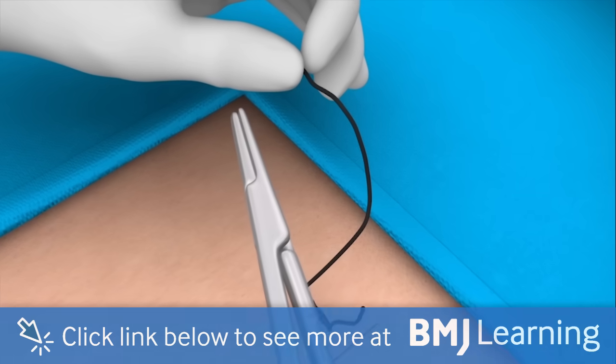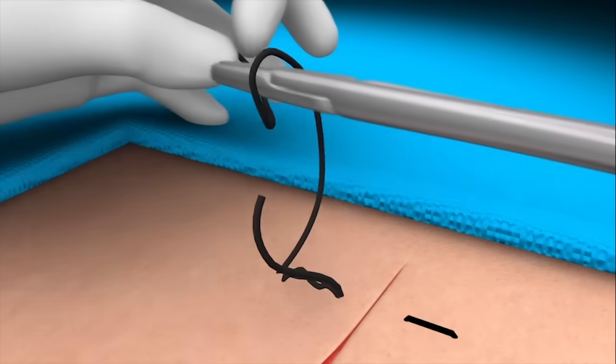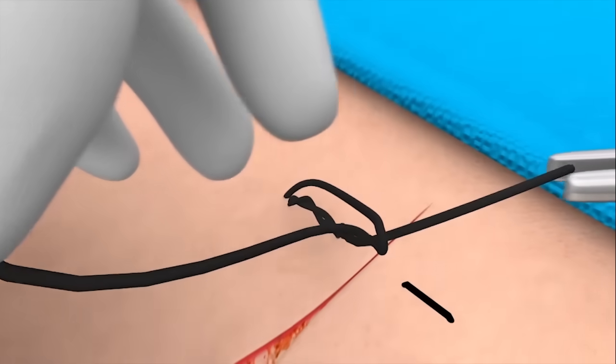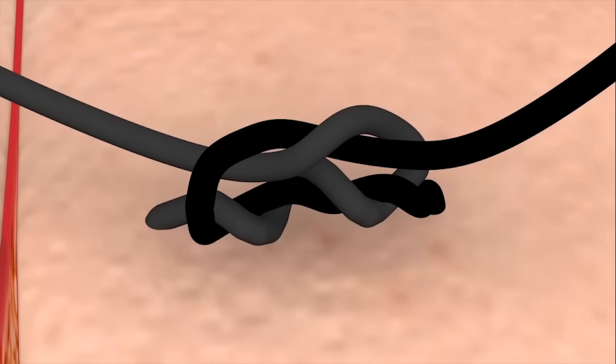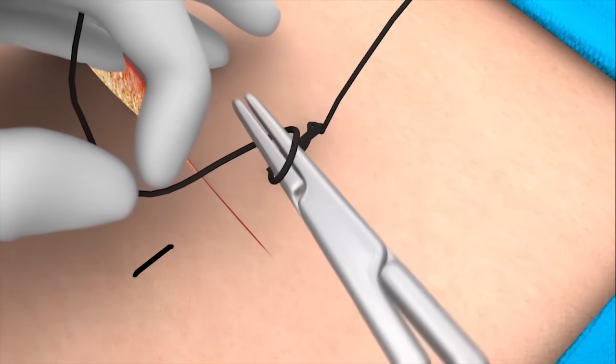This is then followed by a single backwards throw around the needle holder and again the end of the suture is pulled through the loop as it slips off the needle holder. Add a single forward throw in the same way to complete the squared knot.